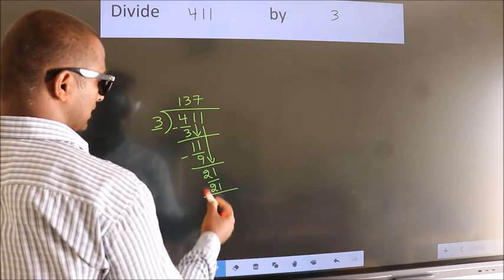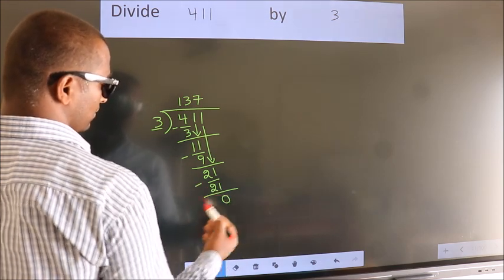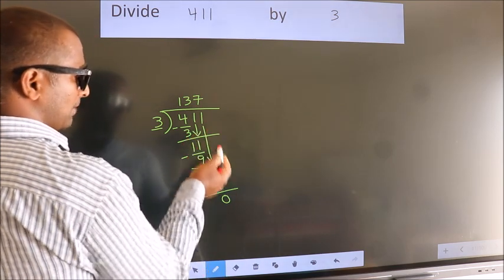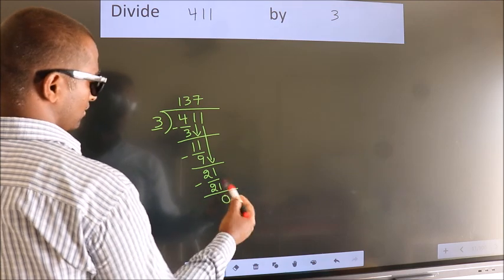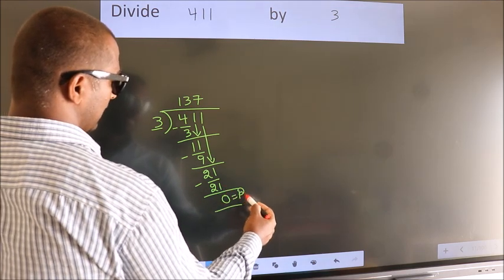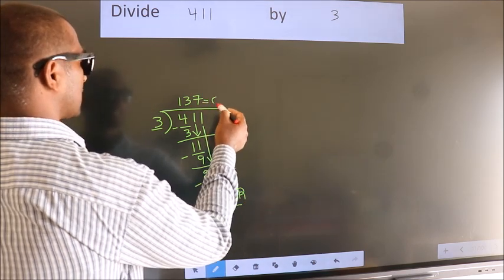Now, we subtract. We get 0. No more numbers to bring it down. So, we stop here. This is our remainder. This is our quotient.